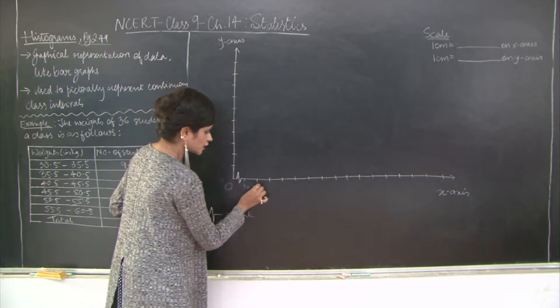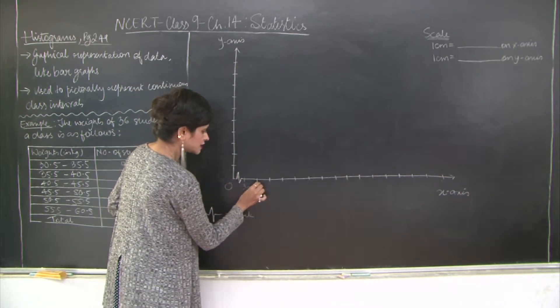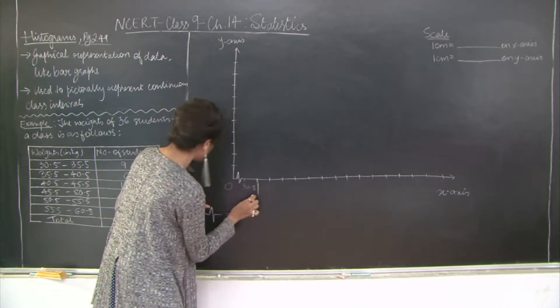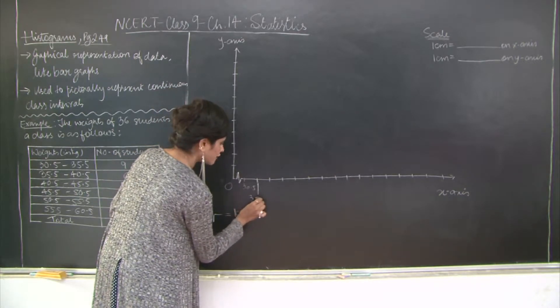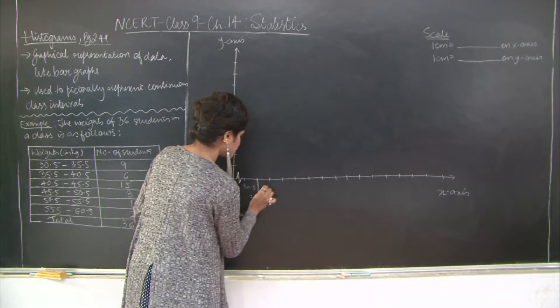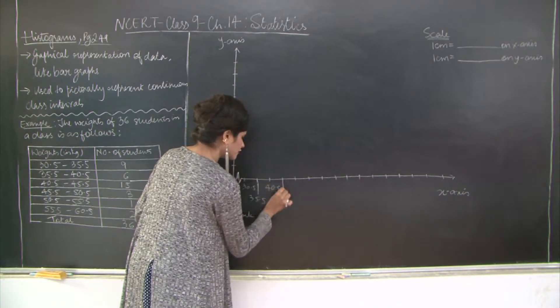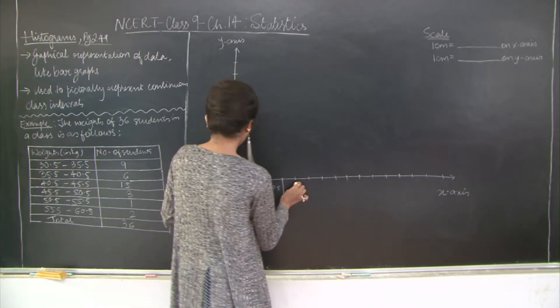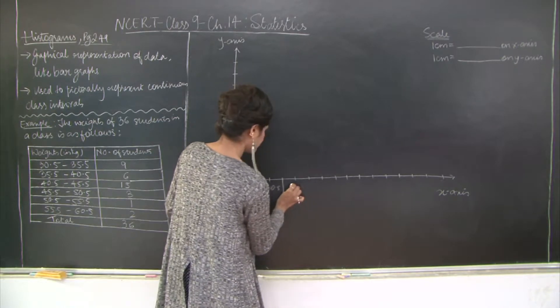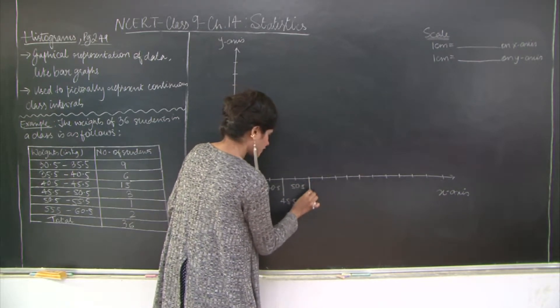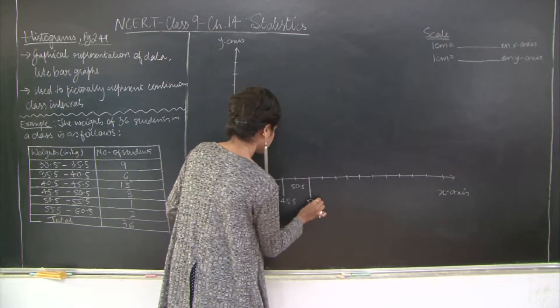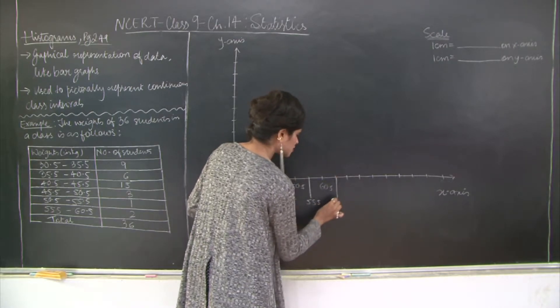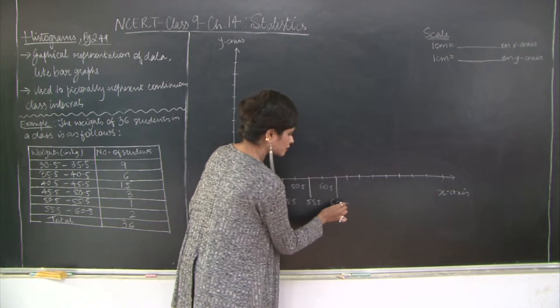We start tabulation from 30.5, then 35.5. We're running short of space, so I'll alternatingly write the values: 35.5, then 40.5, 45.5, 50.5, 60.5, 65.5 and so on.